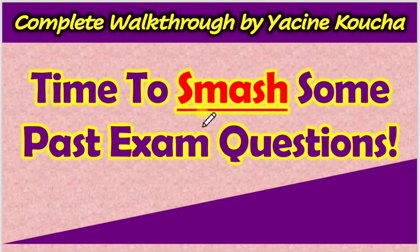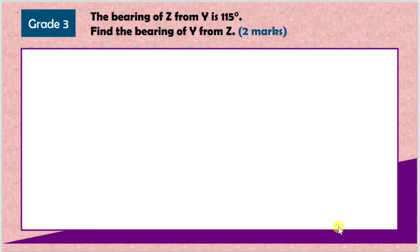Now let's do some examples. Let's try and smash some past exam questions. The first one says: the bearing of Z from Y is 115 degrees. Find the bearing of Y from Z. First things first, I always like to read the question one sentence at a time. It says the bearing of Z from Y, so what we do is highlight the FROM Y bit.